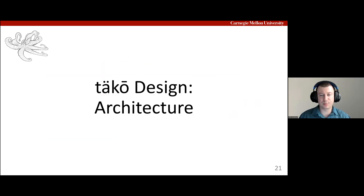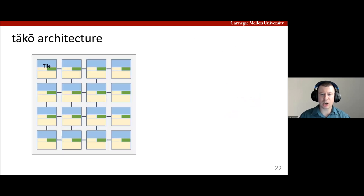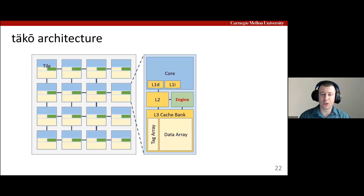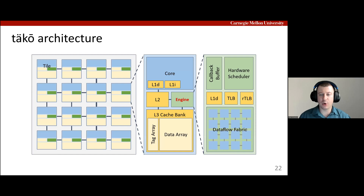That covers TACO's programming interface. Now let's look at TACO's hardware. TACO starts with a baseline multi-core processor. On each tile, TACO adds an engine to execute callbacks. The engine's main components are a hardware scheduler and dataflow fabric. The scheduler spawns threads entirely in hardware without going through the operating system, and the dataflow fabric runs the callbacks.